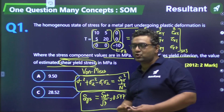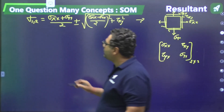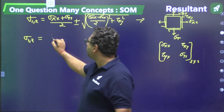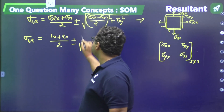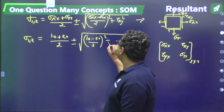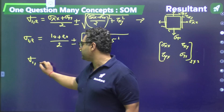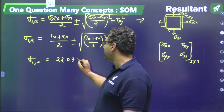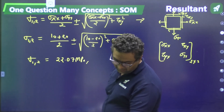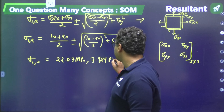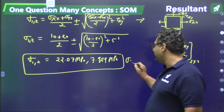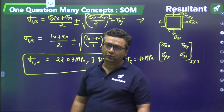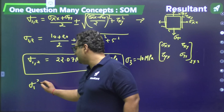Putting in the values — sigma_xx = 10, sigma_yy = 20, tau_xy = 5 — into the formula: (10 + 20)/2 ± √[((10 − 20)/2)² + 5²]. Solving this gives sigma_1 = 22.07 MPa and sigma_2 = 7.929 MPa. Sigma_3 is already known as −10 MPa directly from the matrix.